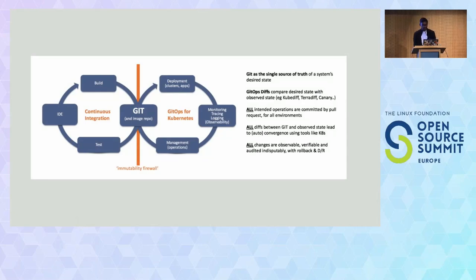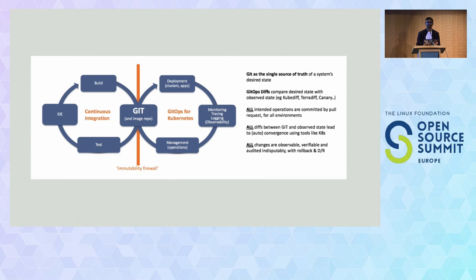This is the flowchart of how GitOps works. Whenever you push a repository, it gets tested and built. Through the CI, it gets built and in the Kubernetes cluster — deployment, cluster apps, monitoring through Prometheus and other tools, and management. There are many GitOps tools like Argo CD, Flux, and Jenkins X.